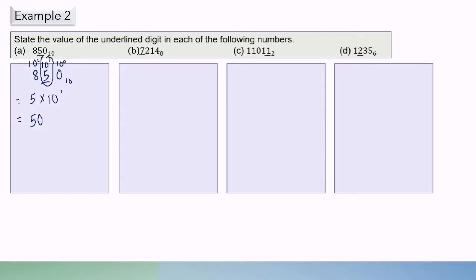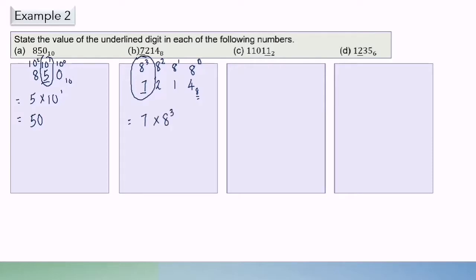Now we look at 7, 2, 1, 4 in base 8. When the question asks you to find the value of the digit, you need to find the value of that digit in base 10. For a number with base 8, we start with the place value at 8 power of 0, 8 power of 1, 8 power of 2, 8 power of 3. So we find 7 times 8 power of 3. The answer is 3584.